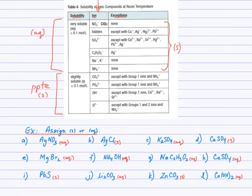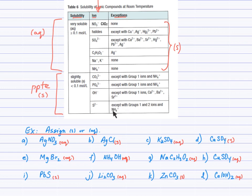Copper 2 sulfate: checking the sulfate, usually aqueous. Copper 2 is not listed as an exception, therefore aqueous. Lead 2 sulfide: looking up sulfide, it's found in the precipitate section. Sulfides are typically solids except with group 1 and 2 ions and ammonium. Lead is not in that category, so lead 2 sulfide will be a precipitate.